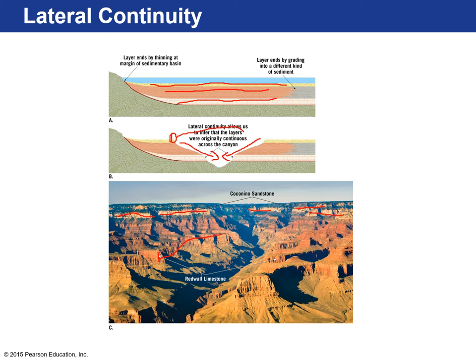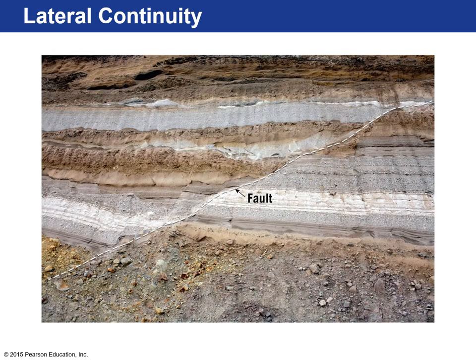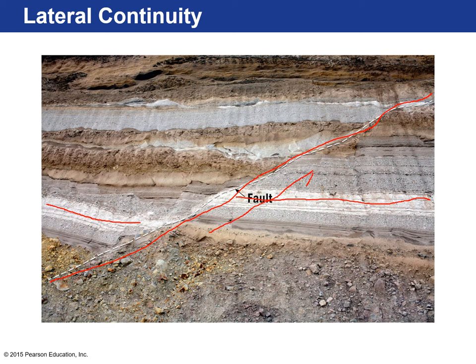Another example of lateral continuity is a fault cutting through horizontally layered sedimentary rocks. A distinctly white layer that was once laterally continuous is now displaced — one block moved in one direction, the other in the opposite direction. They were once connected and laterally continuous.